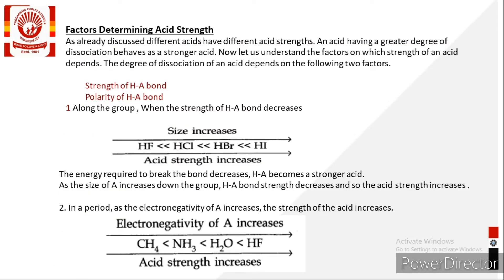The factors affecting acidic strength: acidic strength depends upon the degree of ionization or dissociation constant. The more acidic the strength, the higher the H⁺ ion concentration and the higher the corresponding dissociation constant. Different acids have different acidic strengths and different dissociation constants. An acid with a greater degree of dissociation behaves as a stronger acid.